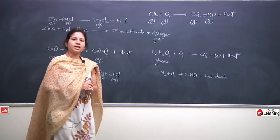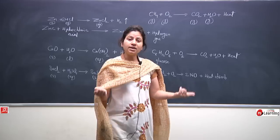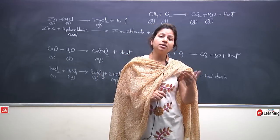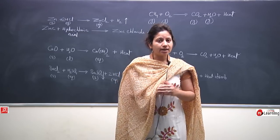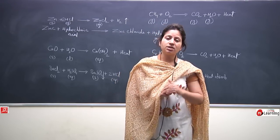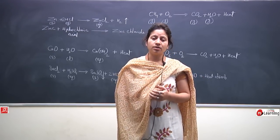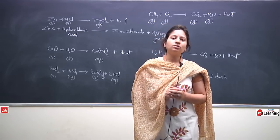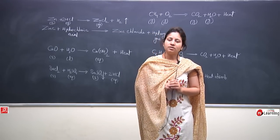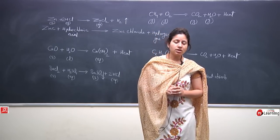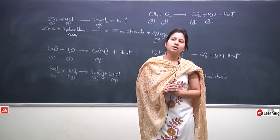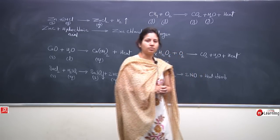The limitation of chemical reaction equations is what they do not tell us: they do not tell us how long the reaction will take to complete, and we cannot get the rate of reaction from the chemical equation — whether it is fast or slow. Secondly, we cannot get the nature of the catalyst — whether it is positive or negative.